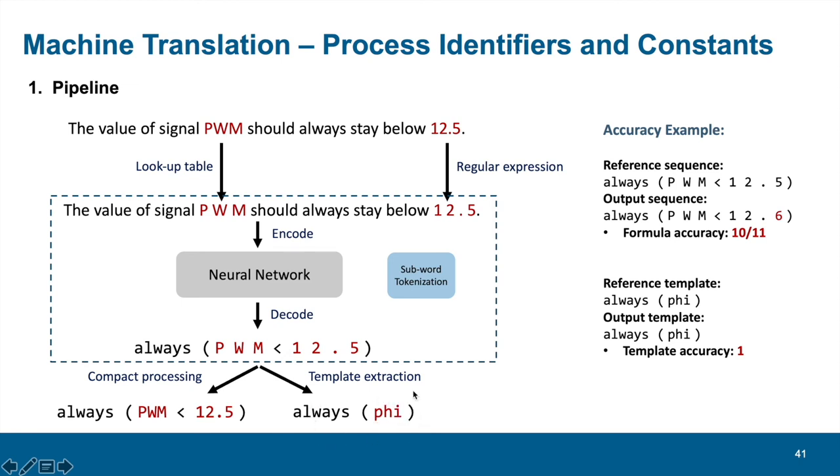Based on the translation, we could calculate some accuracy metrics. In the first example, the output mis-translates phi into 6, and since there are 11 tokens, the formula accuracy is 10 elevenths. However, the reference templates and output templates are completely consistent, so the template accuracy is 1. Normally, the template accuracy would be larger than formula accuracy because it masks possible errors when translating atomic propositions. We will use formula accuracy as an indicator of convergence during training.